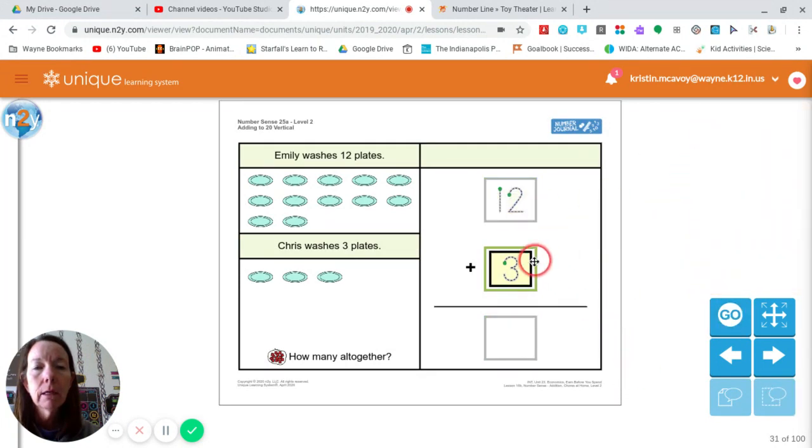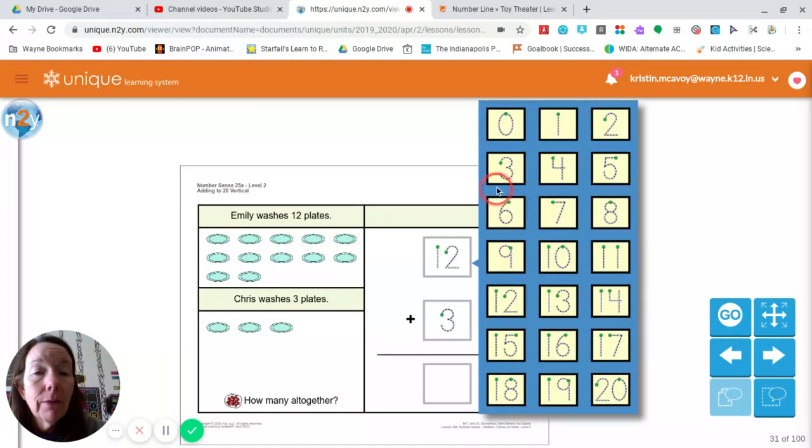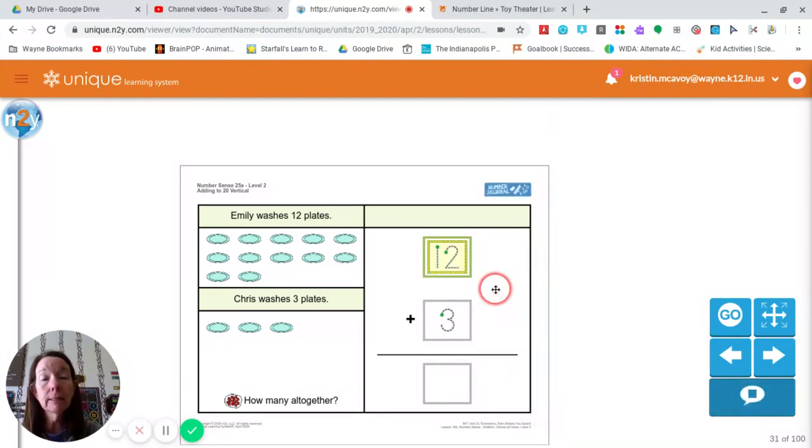We have that Emily washes 12 plates. If we count these plates, we're going to get to the number 12: 1, 2, 3, 4, 5, 6, 7, 8, 9, 10, 11, 12. There's 12. You can trace it. If you know from the activity we did yesterday with our place value, that means it's one 10 and two ones: 10, 11, 12. Let's match it up. You write it 12.